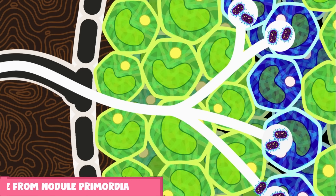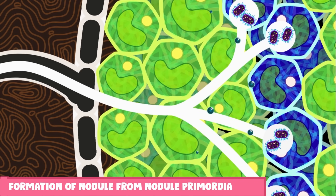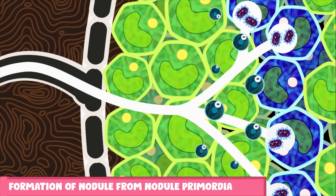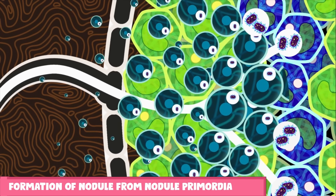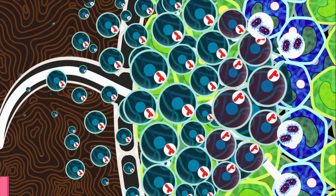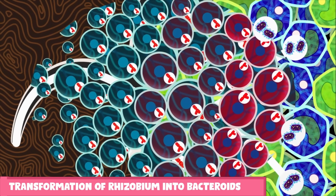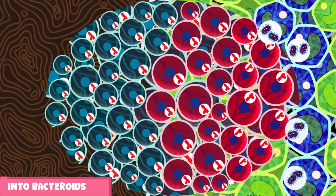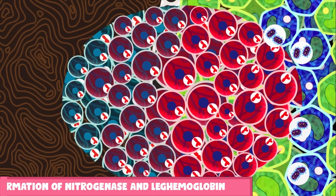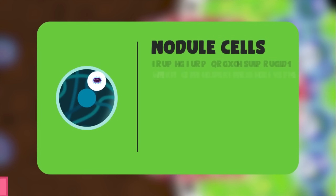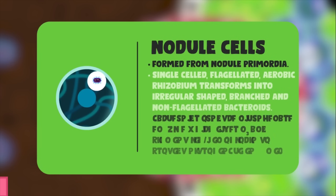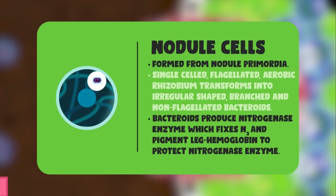The nodule primordia divides to produce an outgrowth called a root nodule. The bacteria present inside the root nodule cells undergo structural and physiological transformations and are now called bacteroids. The bacteroids are irregular-shaped, branched, non-flagellated, and non-dividing forms of rhizobium.